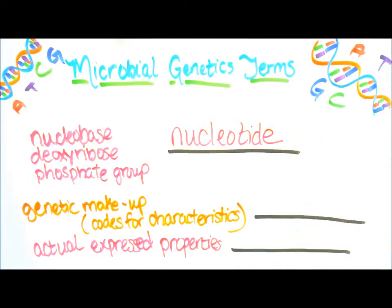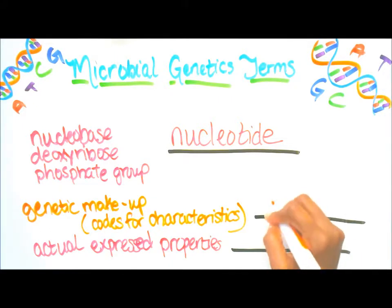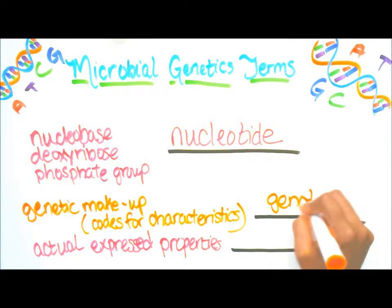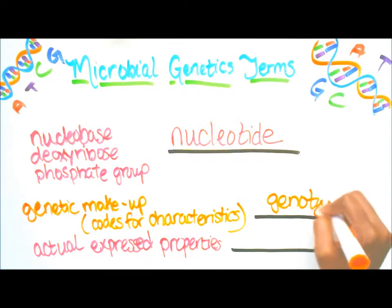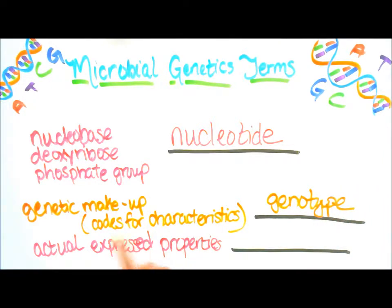The next one: genetic makeup, a code for characteristics — and that's genotype. And our last term: actual expressed properties, and that is phenotype.